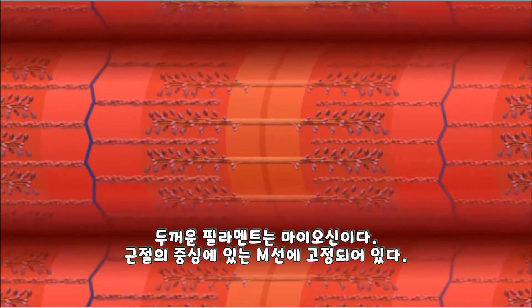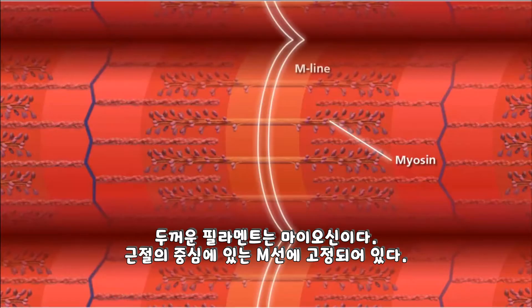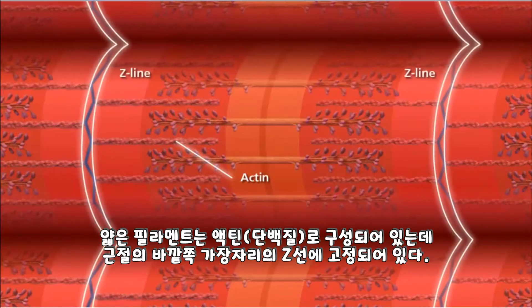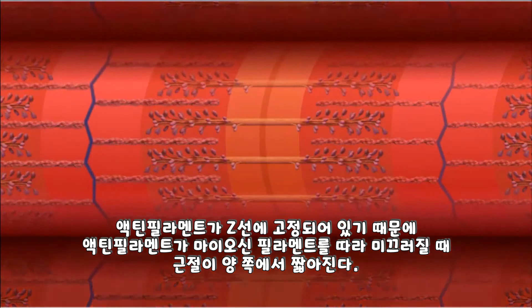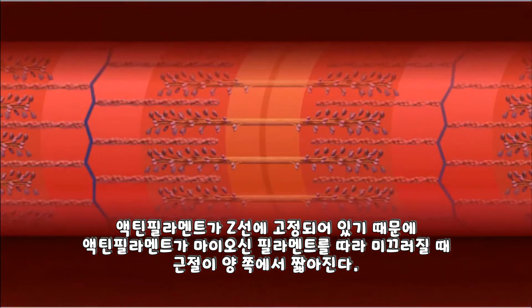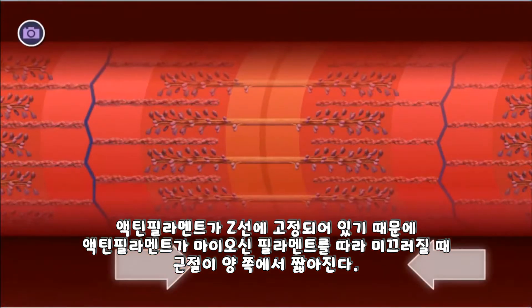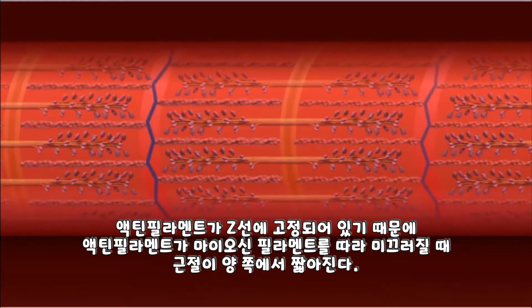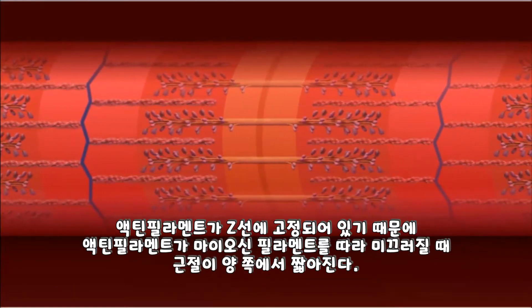The thick filaments are myosin, which are anchored at the center of the sarcomere called the M-line. The thin filaments are composed of the protein actin, which are anchored to the Z-lines on the outer edges of the sarcomere. Because the actin filaments are anchored to the Z-lines, the sarcomere shortens from both sides when actin filaments slide along the myosin filaments.